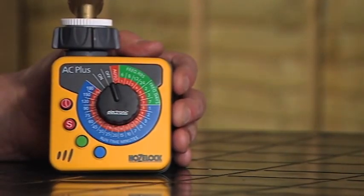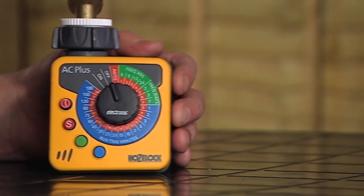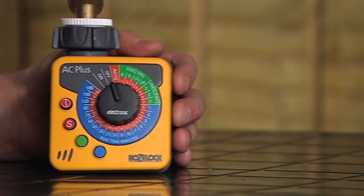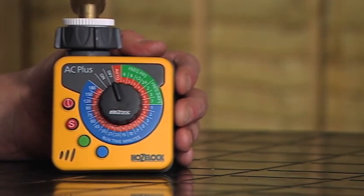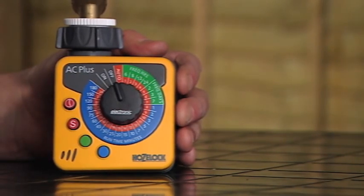Okay, so we fitted the LR14 or size C batteries to the AC Plus and now we want to start programming it to turn our watering system on when we require. The first thing we need to decide is how many times a day we want the watering to occur.